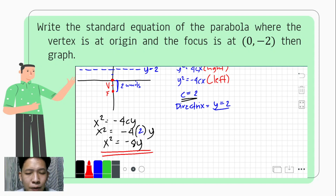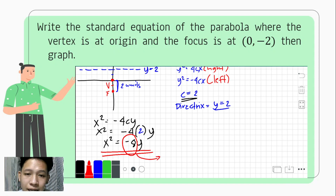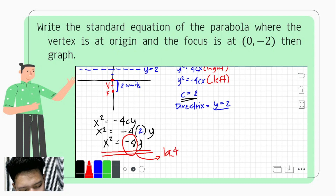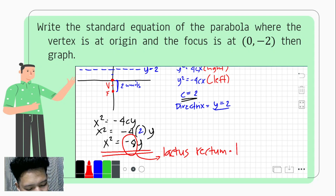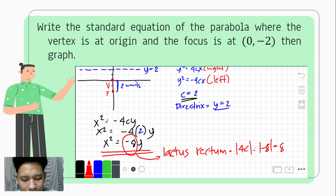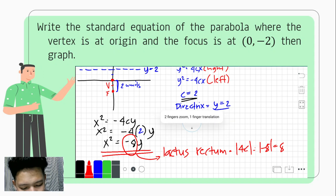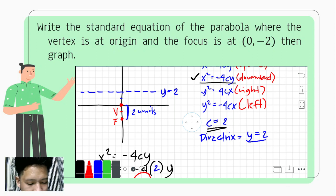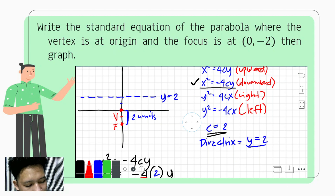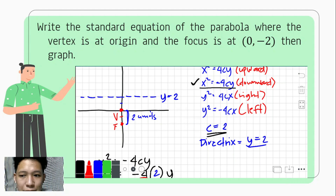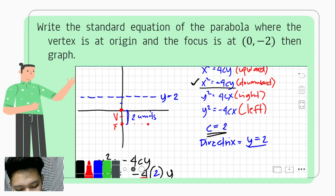We have the idea that since the coefficient is negative 8, we are dealing with the length of the latus rectum. Since we are dealing with the length, we take the absolute value of 4c, which is the absolute value of 8, giving us 8 units. From the focus, we divide 8 by 2, giving us 4. So we count 4 units to the right and 4 units to the left of the focus — this is our latus rectum.